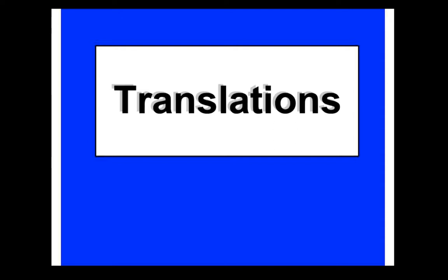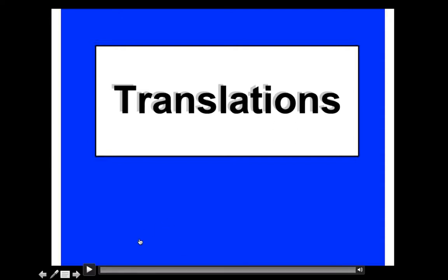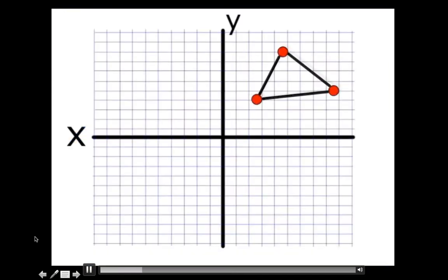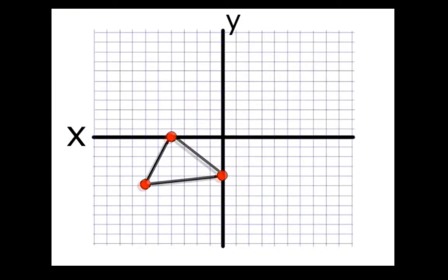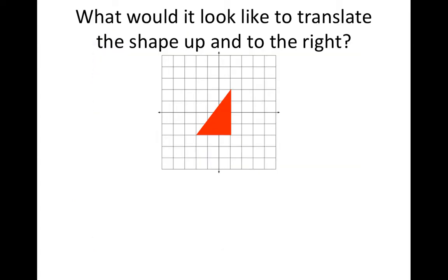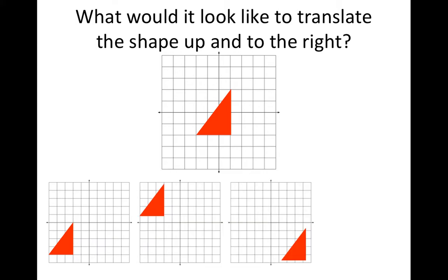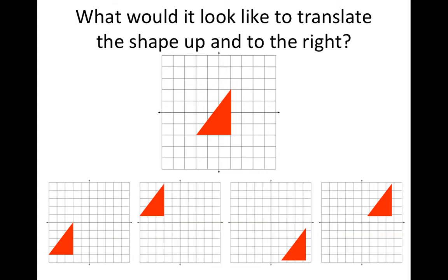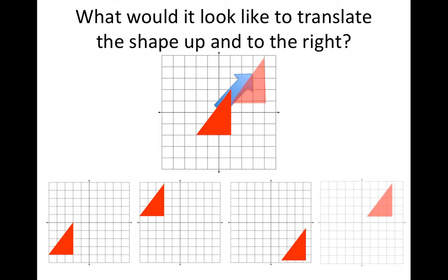So what does a translation really look like in real terms? A translation looks like this. Here's a shape, and it simply moves from one location to another. It stays the same orientation - it just moves from one location to another. So let's take a look at this shape. What would it look like if I moved it up and to the right? Looking at these four options, if I move it up and to the right, it'll look like this. This is the answer - you can see it just moves up and to the right.